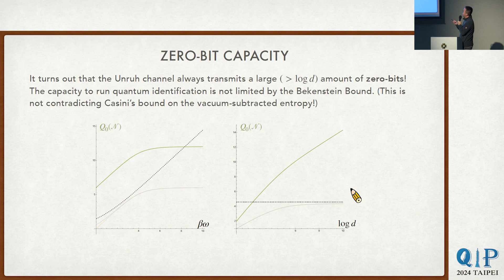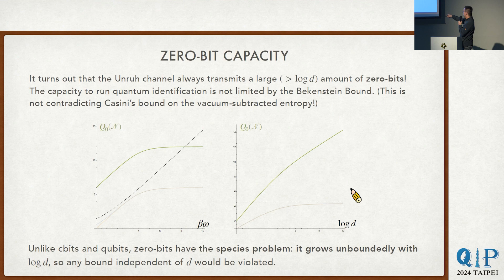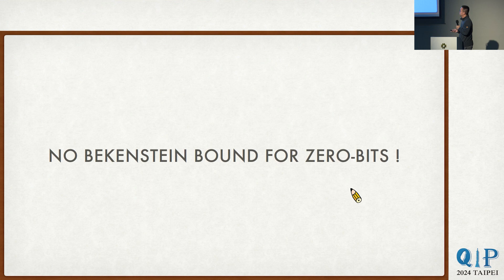With this weaker, less demanding communication task, what we find is that the number of zero bits transmitted by the channel actually does not obey the Bekenstein bound. In fact, with increasing dimension D, this quantity just grows unboundedly—the zero-bit capacity grows unboundedly with log D. So any bound that is independent of D, depending only on the energy and β, is going to be violated. The punchline is: there is no Bekenstein bound for zero bits. What we find is essentially a counterexample.